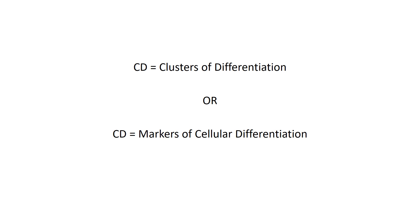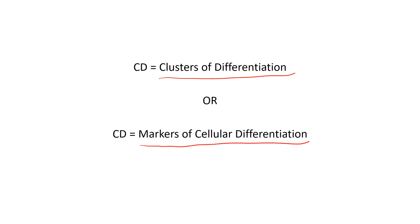All of the CD markers have a common designation, which is the letters CD and then a number. CD stands for clusters of differentiation or markers of cellular differentiation. Markers of cellular differentiation makes the most sense — literally, these are markers that we use, particularly on immune cells, that will tell us the different types of cells we're dealing with and maybe the stage in their development or differentiation. Why they were ever called clusters of differentiation nobody really knows, but markers of cellular differentiation makes a lot more sense.